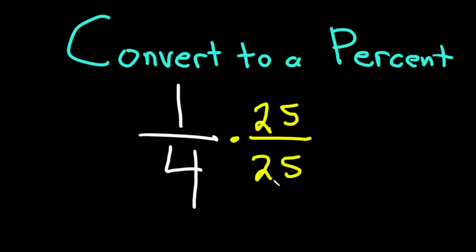You're basically now just multiplying by 1. And notice 4 times 25 is 100, so you get 100 on the bottom. And 1 times 25 is 25. So you just multiply across, right? 4 times 25 is 100, 1 times 25 is 25.